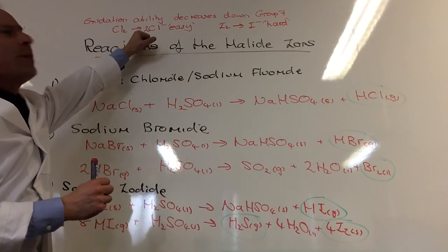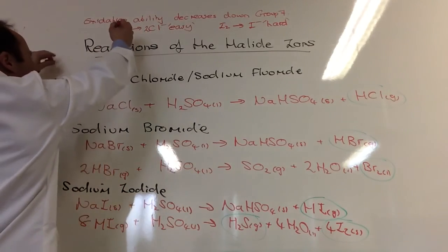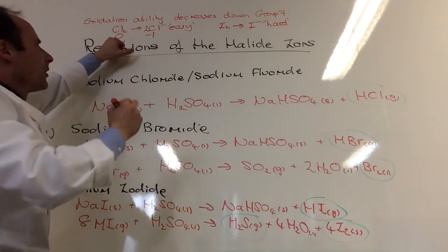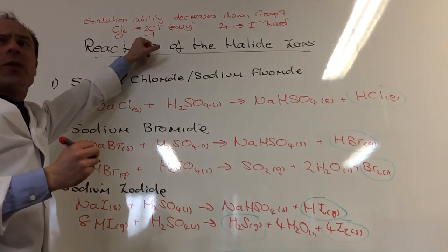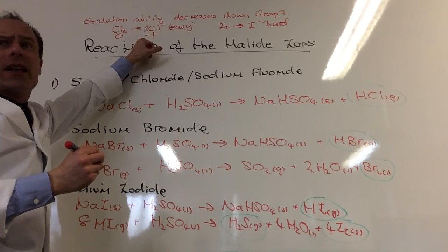Are you happy that chlorine's being reduced there? It starts at oxidation state zero, then becomes minus one. So he's being reduced, so we call him an oxidising agent.